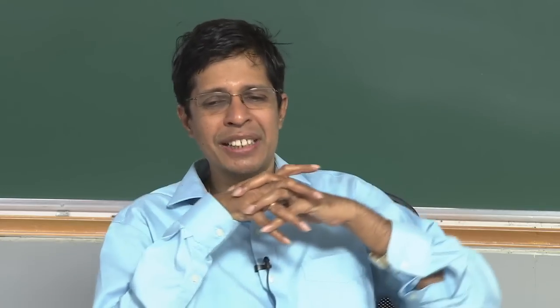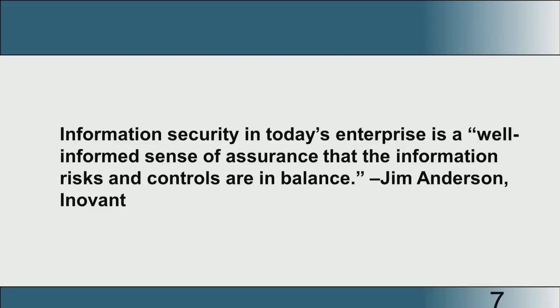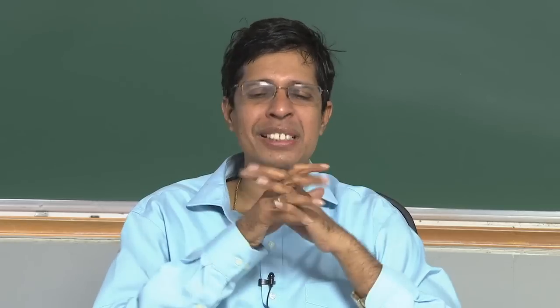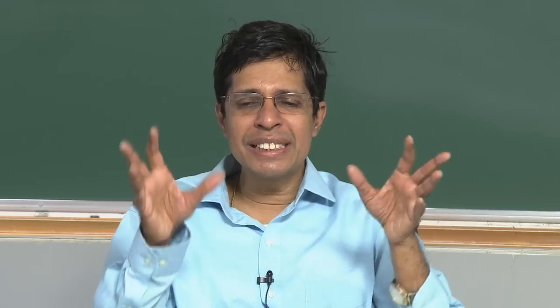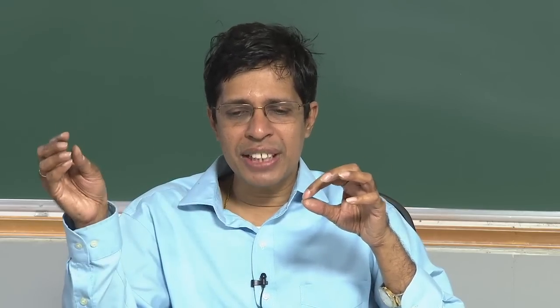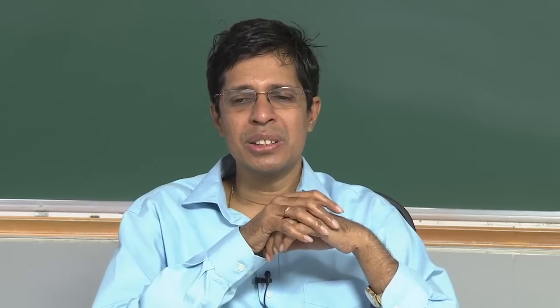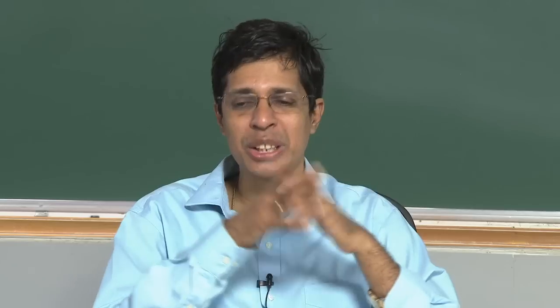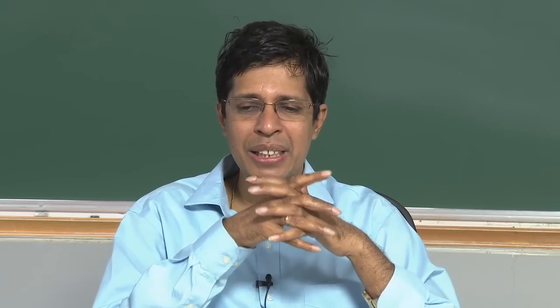Jim Anderson came out with a very interesting definition of information security, especially relevant in today's enterprise world with huge data centers. It is 'a well-informed sense of assurance that the information risks and controls are in balance.' For every risk, there is a way to control it. If you have enough checks and balances to control a risk, then your information is actually secure. This is the definition given by Jim Anderson.